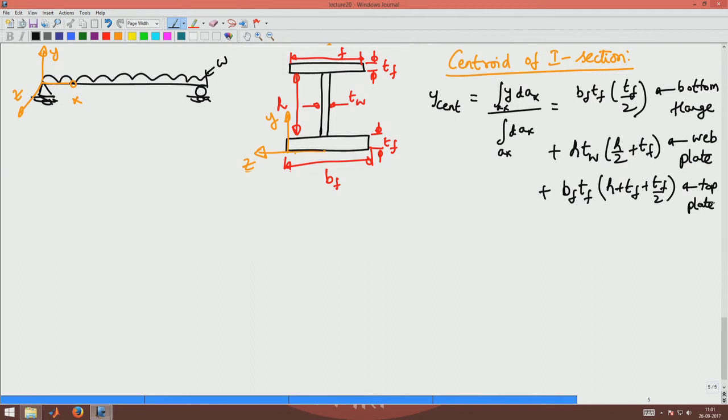That is the centroid - I am multiplying the area by the centroid of the respective sections, divided by the total area: H times Tw plus 2 times Bf times Tf, the area of the bottom flange and the top flange.